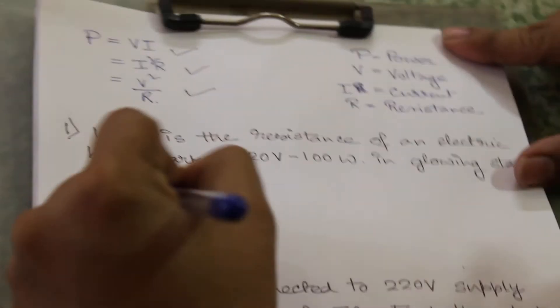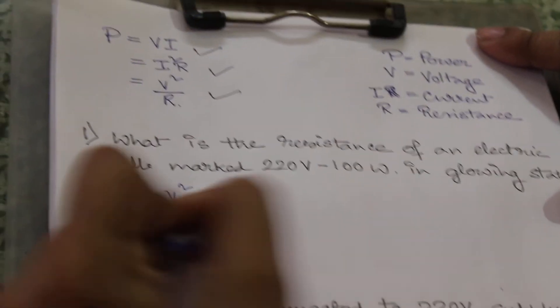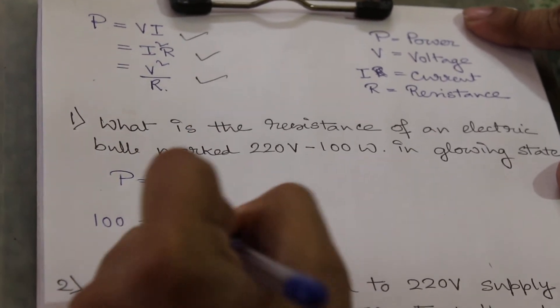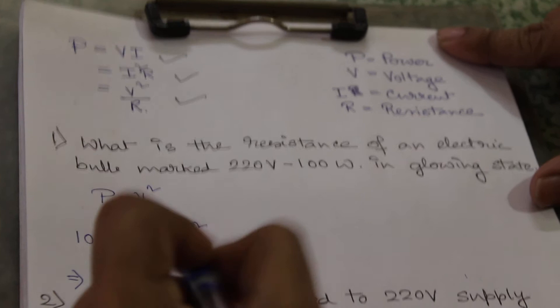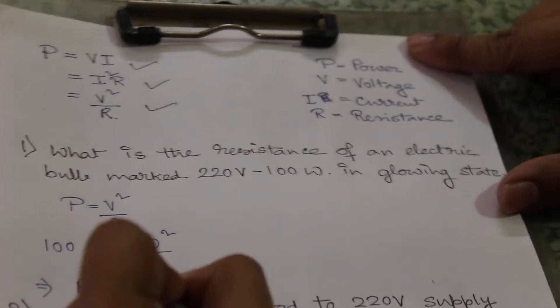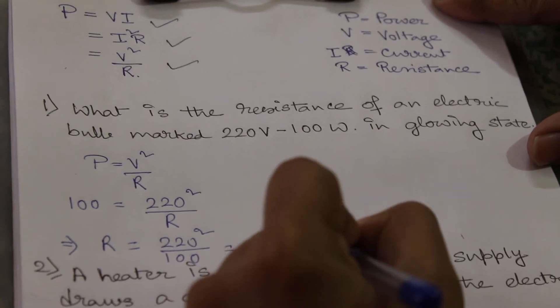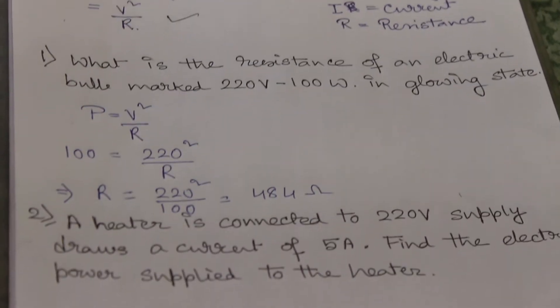So power is 100, voltage is 220, we have to calculate R. So from here it will be R equals 220 squared divided by 100, which will be equal to 484 ohm. So this is the answer, moving on.